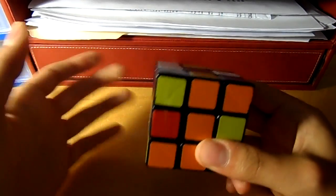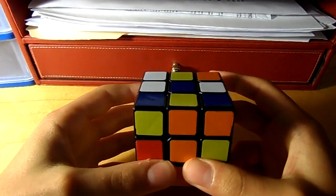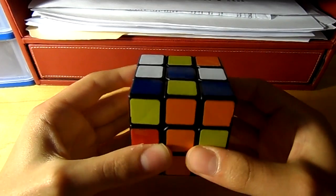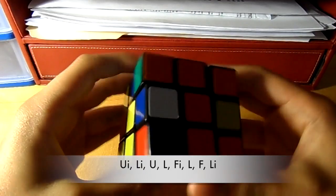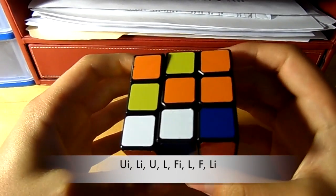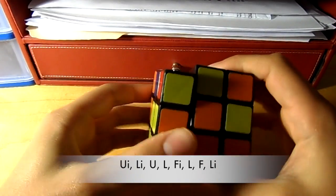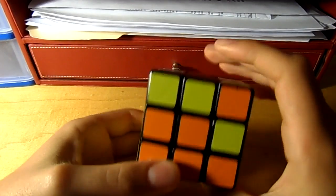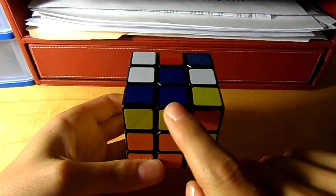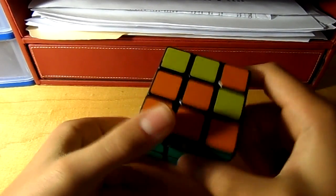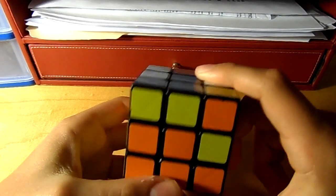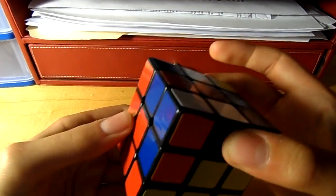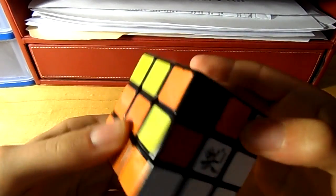So here are the following moves: up inverted, left inverted, up, left, front inverted, left, front, left inverted. And you can see that you just moved the piece that was here to the left without destroying anything that you did on the bottom.